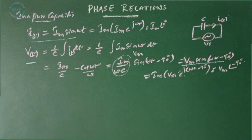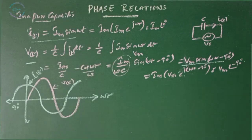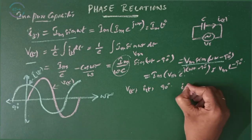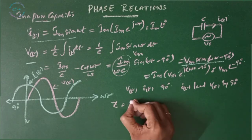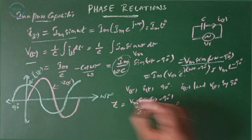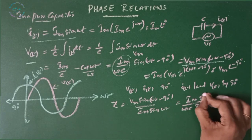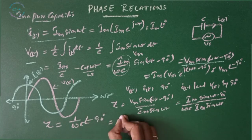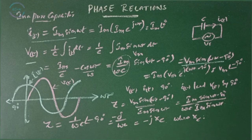For a pure capacitor, voltage and current are out of phase by 90°, where the current leads the voltage by 90°. The impedance Z is given by V(t)/I(t) = Vm·sin(ωt-90°) / Im·sin(ωt). Since Vm = Im/ωC, this gives Z = (1/ωC)∠-90°, which we can write as -j/ωC, or equivalently -j·XC, where XC is the capacitive reactance.